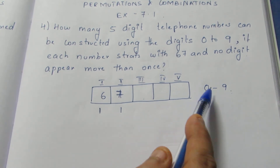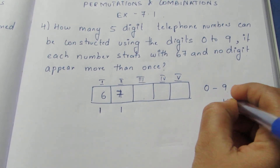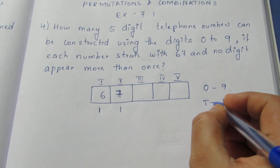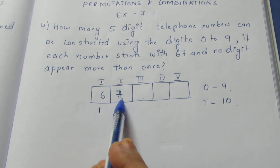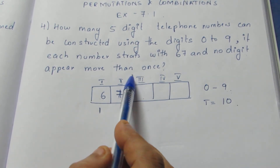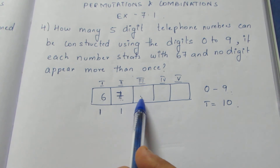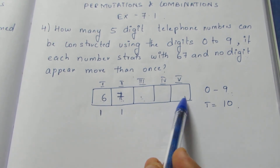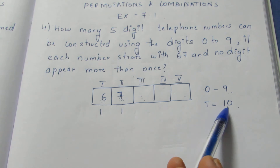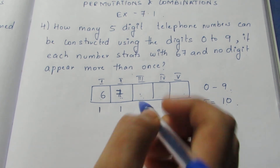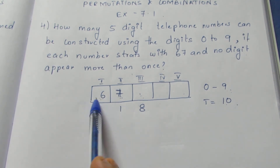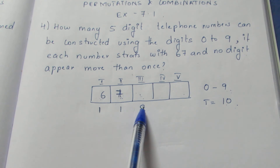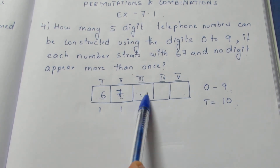For the third box, the total number of digits from 0 to 9 is 10. We have already written two numbers — 6 and 7 — and there is no repetition, so we can't write 6 or 7 in the third, fourth, or fifth box. Leaving those two numbers from the 10, we can fill the third box in 8 ways.